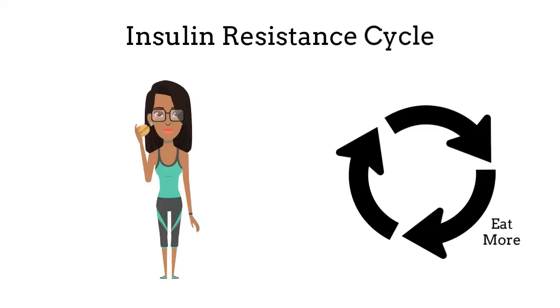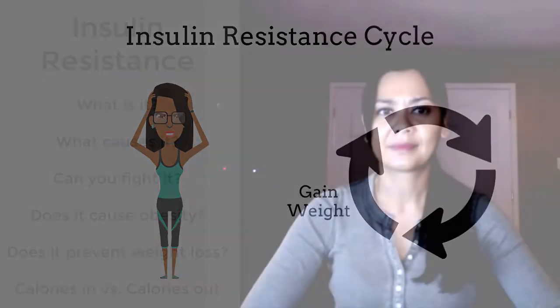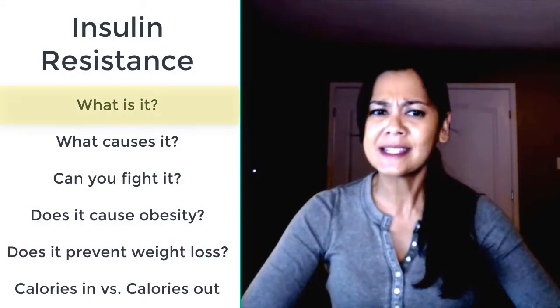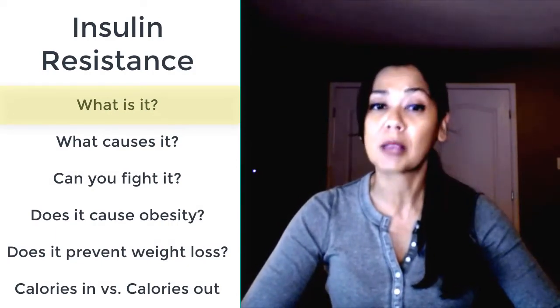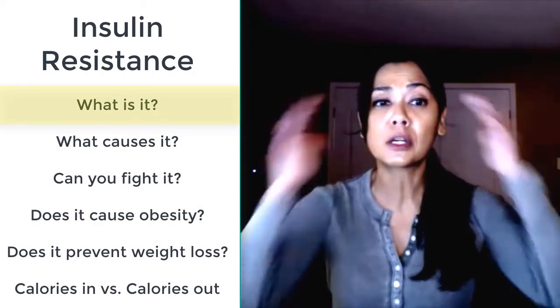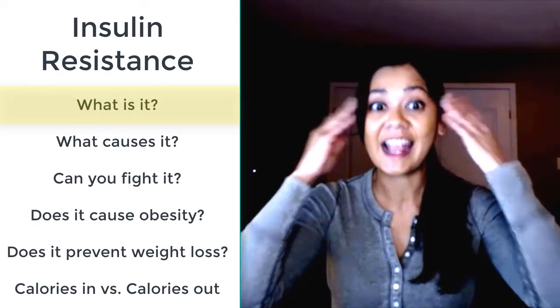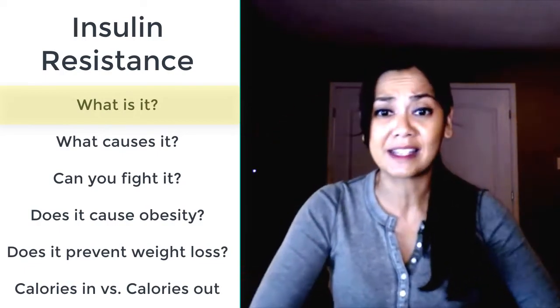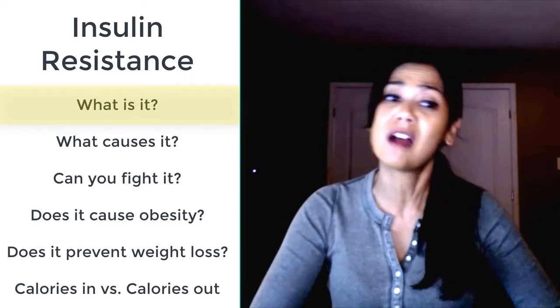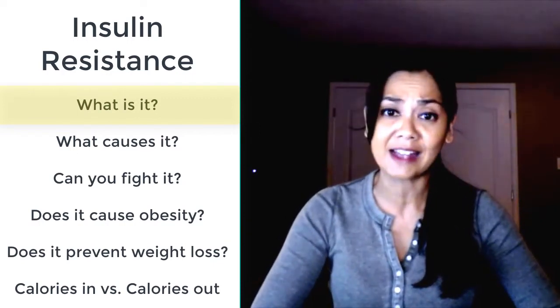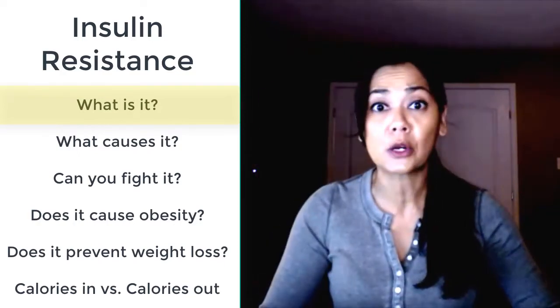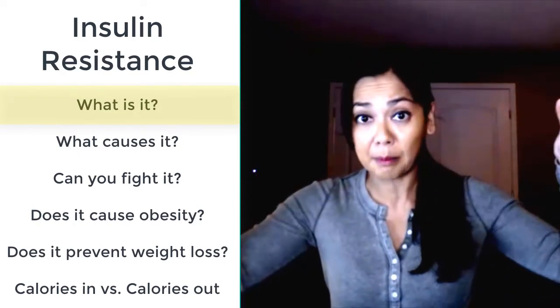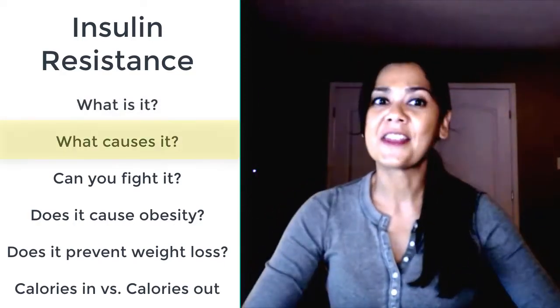So insulin allows your cells to absorb glucose, and when you are insulin resistant your blood sugar goes up sending signals to your brain that you need to eat. And then you excrete more insulin and the excess glucose not absorbed by your cells gets stored as fat, and this cycle goes round and round and round making your weight go up and up and up.